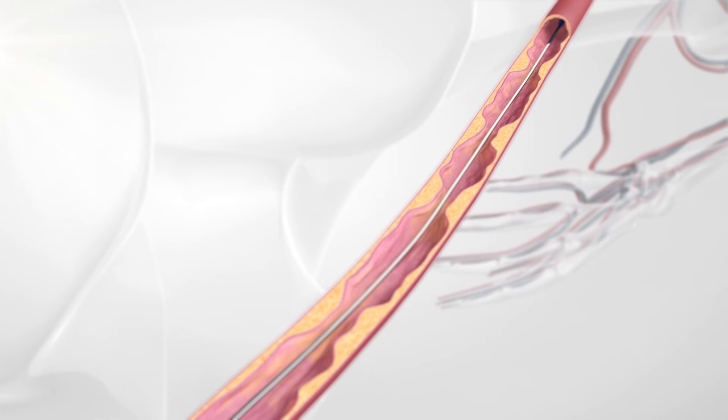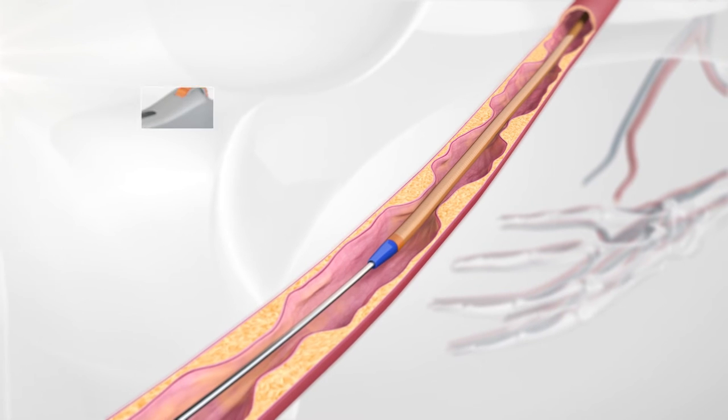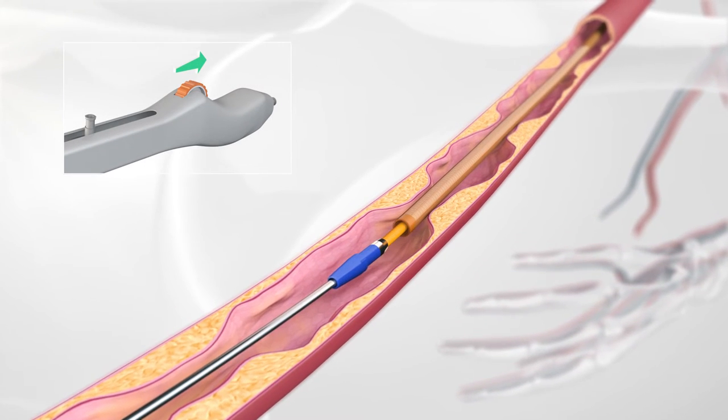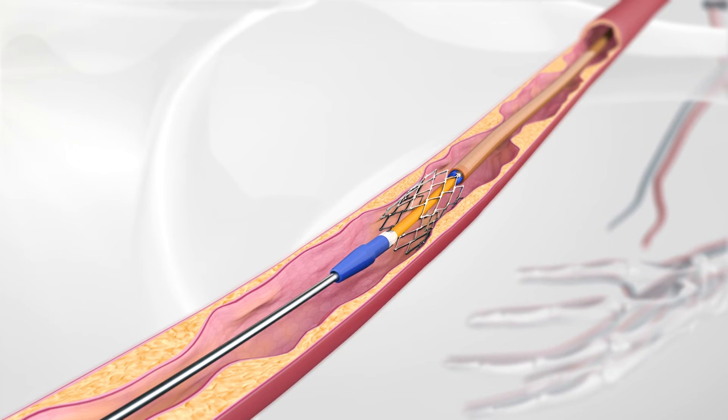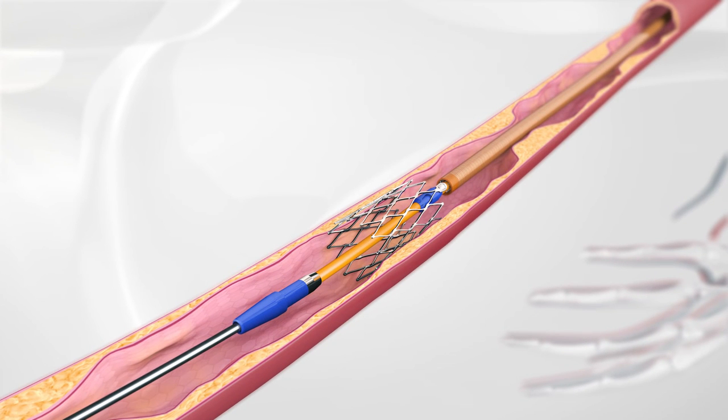After pre-dilatation with a balloon catheter, the first short stent can be implanted. By turning the wheel on the handle, the stent is released into the lesion of the vessel. The stent is completely released once the marker band is unlocked from the mount point.